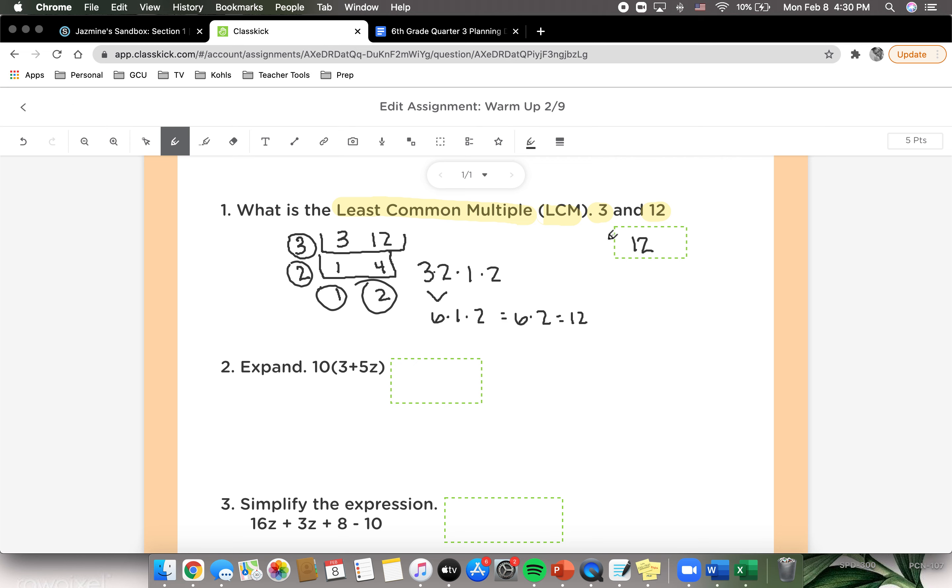Looking at number 2, it says expand 10 parentheses 3 plus 5z. So we're going to take this outside expression and multiply each term on the inside of the parentheses by it. So we get 10 times 3, which gives us 30, and 10 times 5z, which gives us 50z. And they're both positive, so our final answer would be 30 plus 50z.